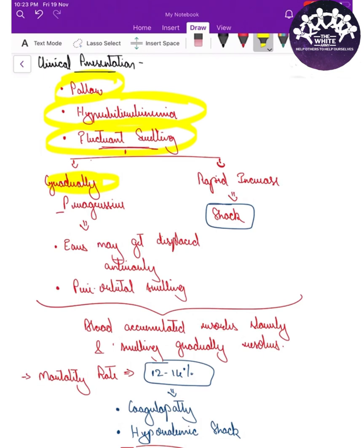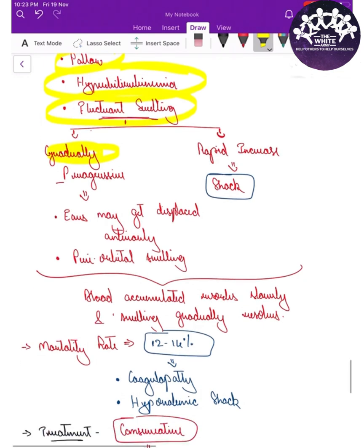The course of this fluctuant swelling is either gradually progressive — which is why we need daily head circumference monitoring. This gradually progressive swelling leads to displacement of the ears anteriorly, and as it can extend up to the supraorbital ridges, there can be periorbital swelling. On the other hand, it can result in a rapid increase in head circumference.